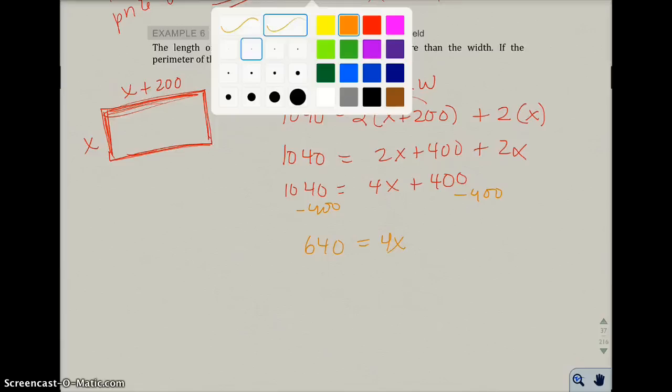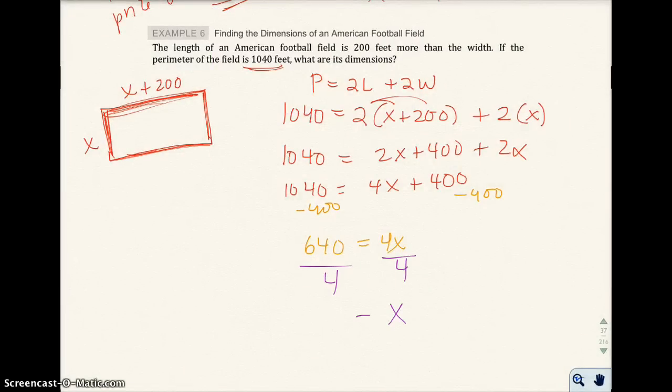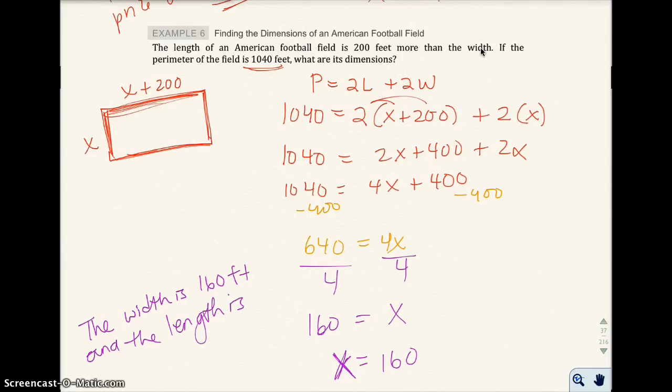Now I'm going to divide both sides by 4 to get x alone. So x equals 160. So x equals 160. And so we want to go ahead and find the dimensions of the field. The width is 160 feet because x represents the width of this rectangle, or this football field. And the length is 160, which I put right here, plus 200, which is 360 feet.